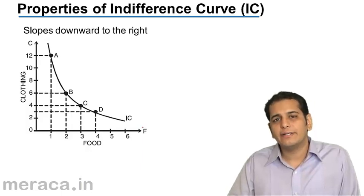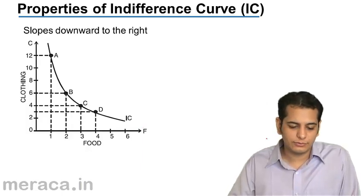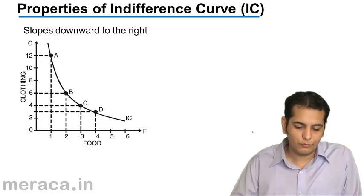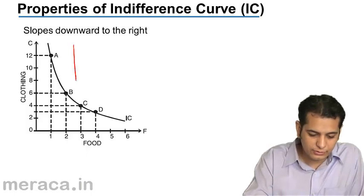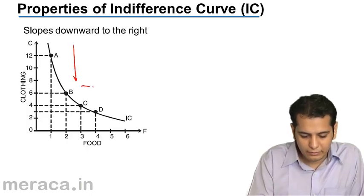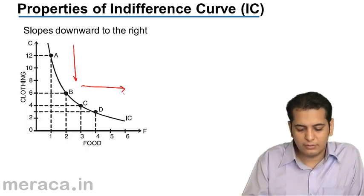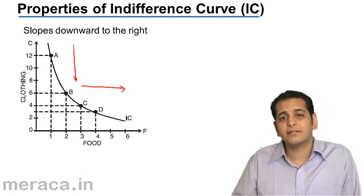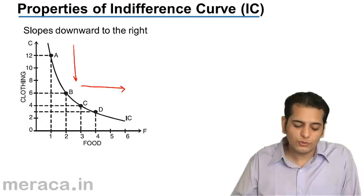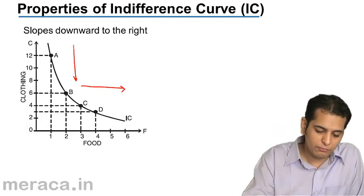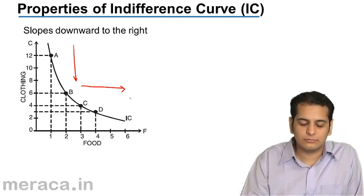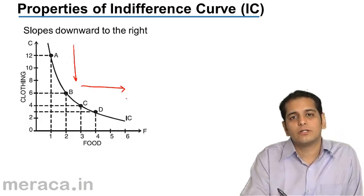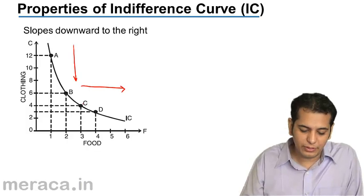Properties of indifference curves. The first property is the indifference curve is downward sloping from left to right, just like the demand curve.